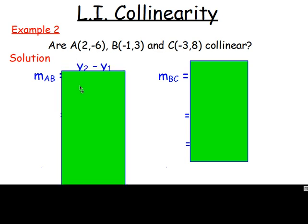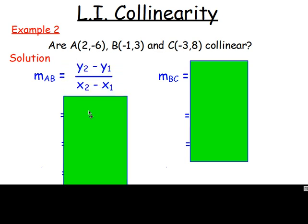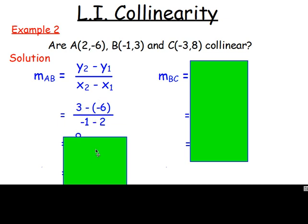So if we work out the gradient of A, B, it's Y2 take Y1 over X2 take X1. So three take away negative six over negative one take away two. That would become three add six, which is nine. Negative one take two is going to be negative three. If I divide that, well, nine divided by three is just going to be three. And I've also got one of the numbers as a negative, so it's going to give me negative three.